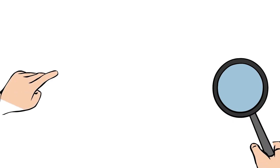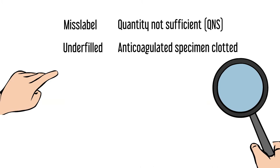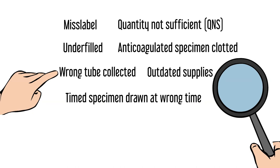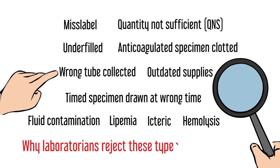Common reasons for specimen rejections are: mislabel, QNS or quantity not sufficient, underfill, anticoagulant specimen that are clotted, wrong tube collected, outdated supply, time specimens drawn at the wrong time, fluid contamination, lipemia, icteric, and hemolysis. Why do laboratorians reject these types of specimens? Let's take a closer look.